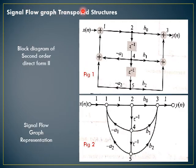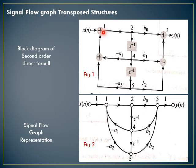Next, we will see the signal flow graph and transpose structure. Block diagram of a second order direct form 2: at the center we have the delays, and on the left and the right side we have the adders. The left side is poles and the right side is zeros. To draw this as a signal flow graph, wherever you find adders and a node, you give a single node. We have adder nodes 1, 2, 3, 4, and 5 which are joined accordingly.